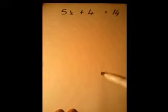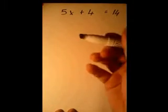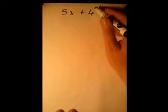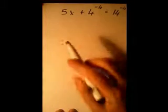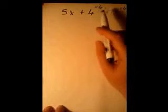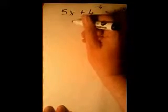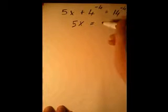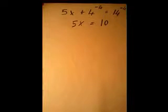Start with the number that's not next to the X — in this case the 4 — and we want to get rid of it. We subtract 4 on the left, but since we do it on one side we have to do it on the other side too. Plus 4 minus 4 cancels out to zero, so we're left with 5x on the left and 14 minus 4 equals 10 on the right. So 5x equals 10.